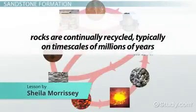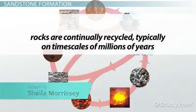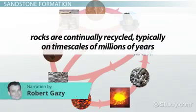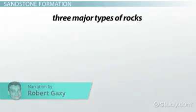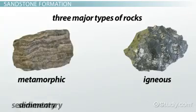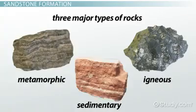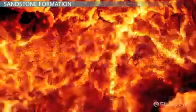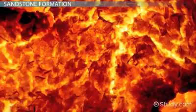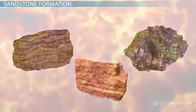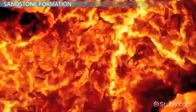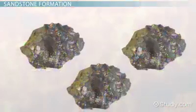Rocks are continually recycled, typically on timescales of millions of years, in what's known as the rock cycle. The three major types of rocks — igneous, metamorphic, and sedimentary — can each be turned into a new metamorphic rock when given enough heat and pressure. Each rock type can also be turned into a new igneous rock if it is completely melted and then cooled again.